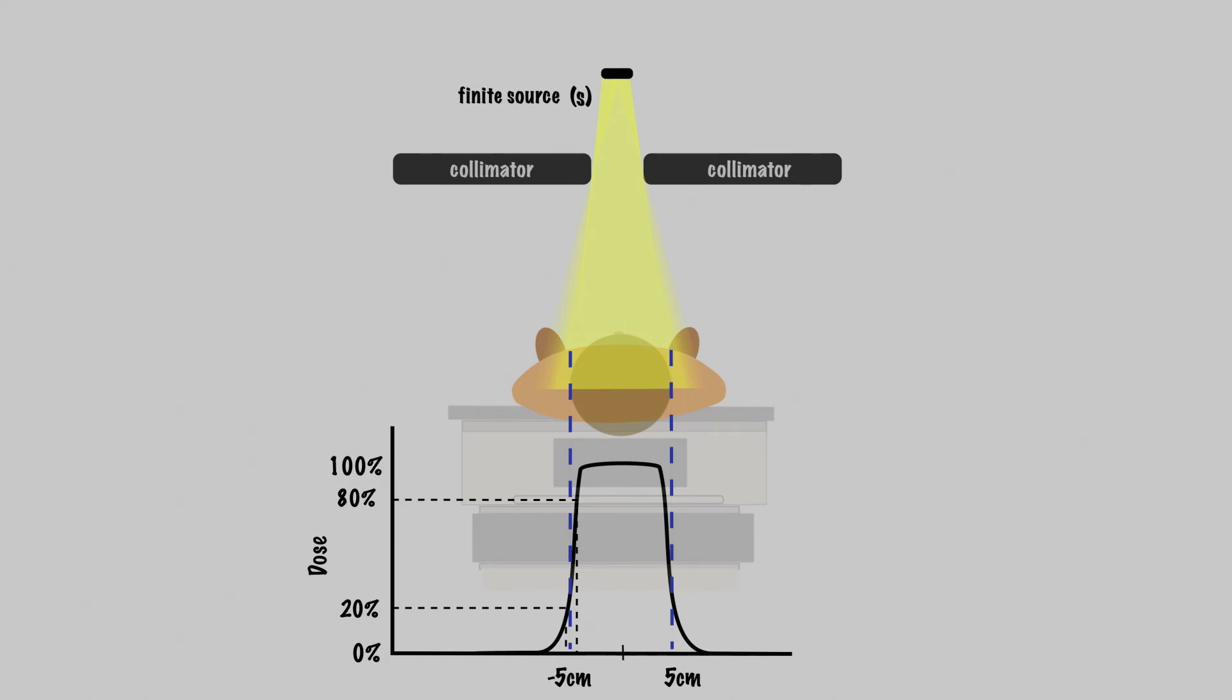One more point of interest here is the dose at 50%, right there. That's how we define our field edge. So if we have a 10 by 10 centimeter field, it's 10 centimeters from the 50% dose on one edge to 50% on the other edge. Another way to say that is the dose drops to 50% at a distance of 5 centimeters from the central axis.